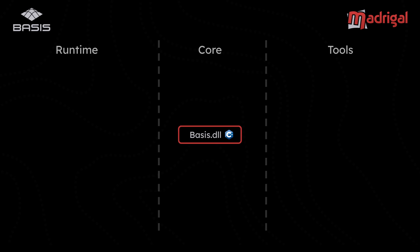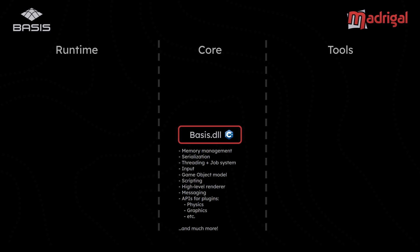Smack in the middle we have basis.dll — this is the core engine library. On Mac it would be .dylib, on Linux platforms it would be .so, but we're using .dll here because Windows is the main platform. Now it's written in C++ and it provides a whole bunch of things: memory management, serialization, threading, input. The game object model is hosted here, and scripting — so AngelScript is found here. The high-level renderer refers to the system that concerns itself with meshes, materials, the scene hierarchy, post-processing effects, shadow mapping, and so on. Messaging can also be found in the core engine library, and then we have APIs for plugins, which I'll go into detail about later.